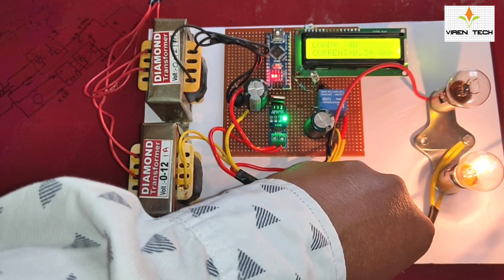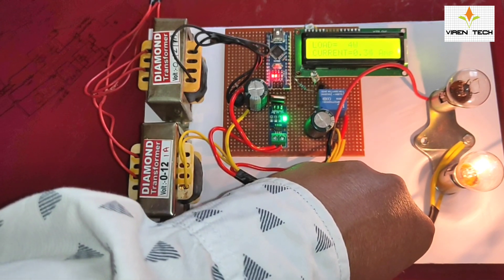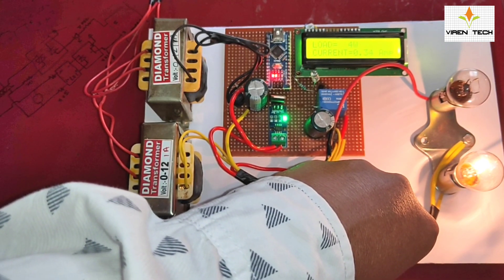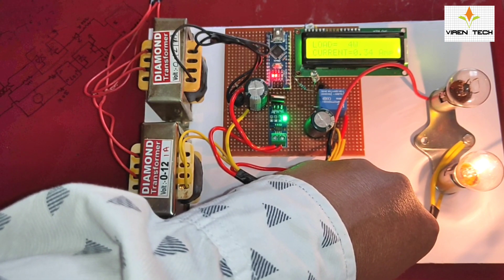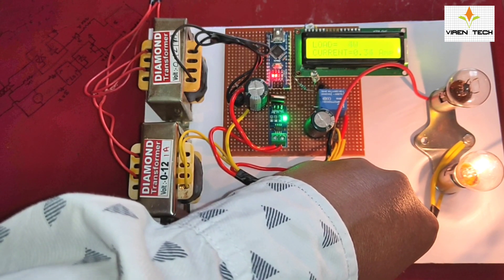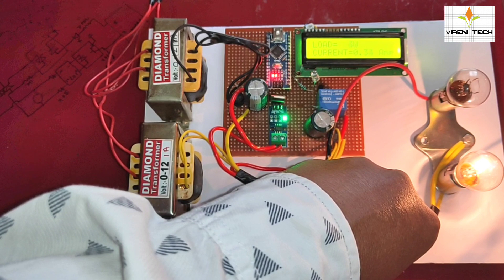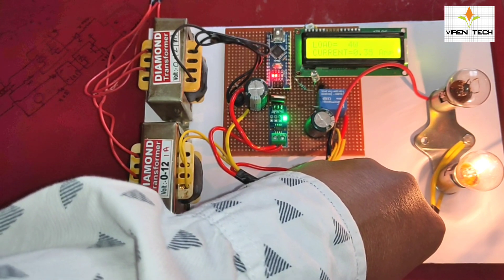Now just observe the light intensity of the lamps. When I turn on the switch both lamps will turn on and the intensity is low. As soon as the second transformer turns on the intensity will increase.